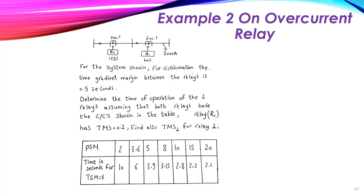Let's have another example. In the system shown, we have two protection relays R1 and R2. R1 has a pickup setting of 100%, which means it will operate at one times the CT secondary. R2 operates at 1.25 times the CT secondary. The CT used is 200-to-1, converting 200 amperes in the feeder to 1 ampere. The fault current here is 2000 amperes.